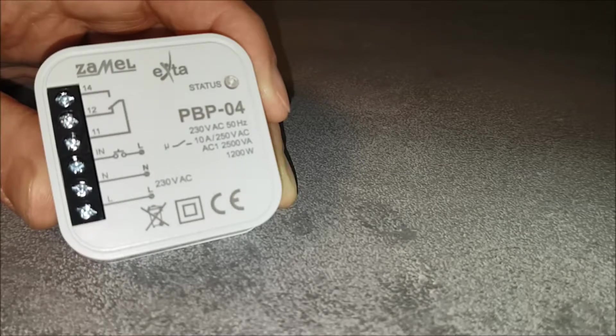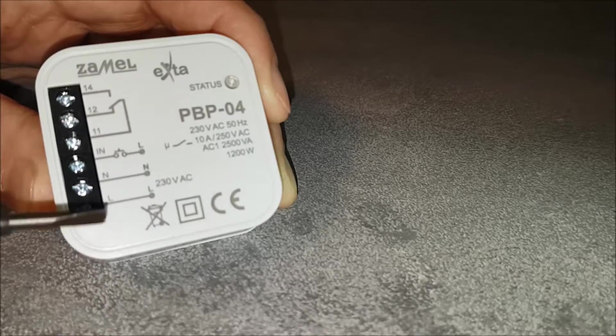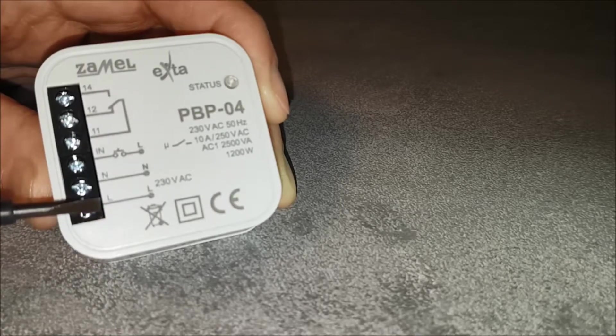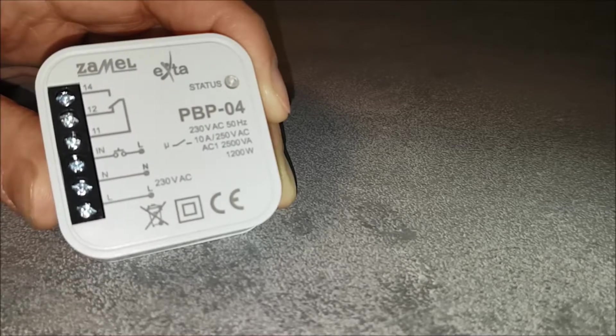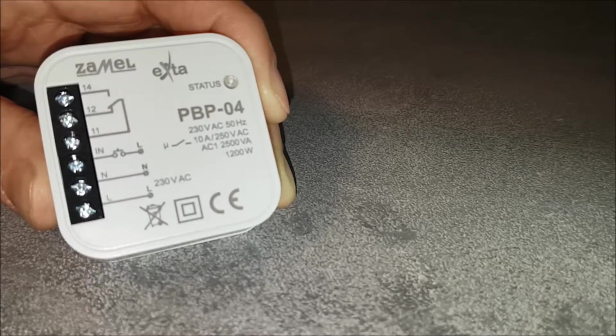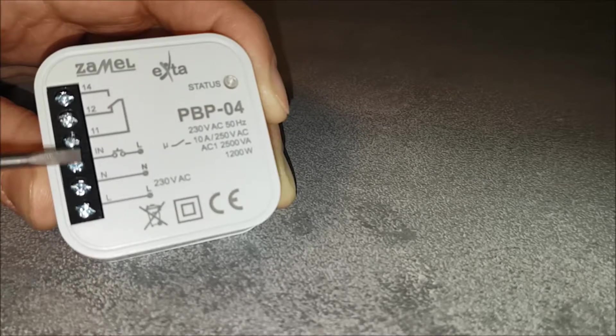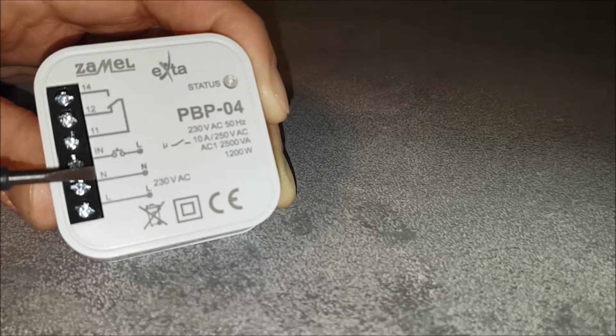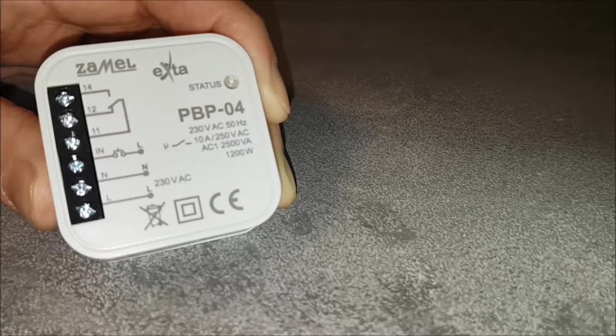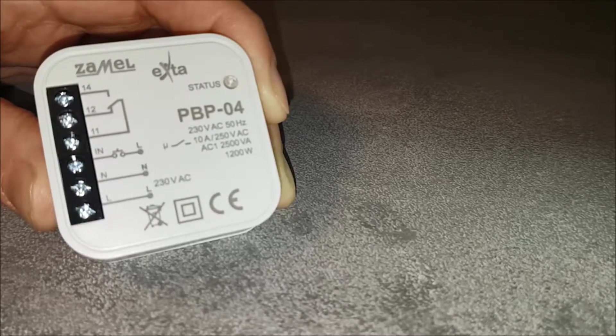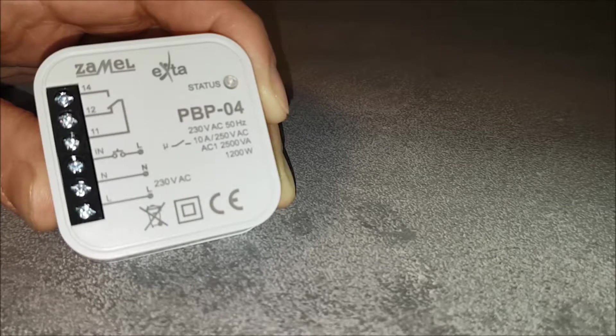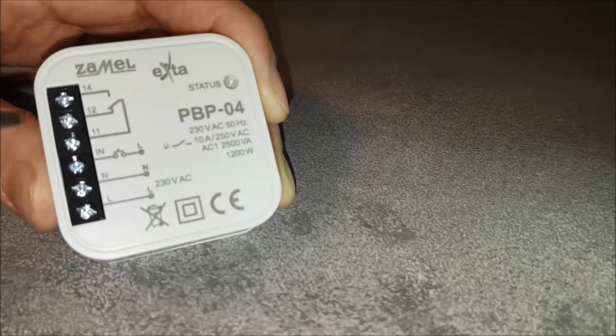Connection of the bistable relay PBP-04 requires connecting the phase wire to the terminal marked with the IN symbol. A trigger button will pass the phase to the terminal marked with the IN symbol.